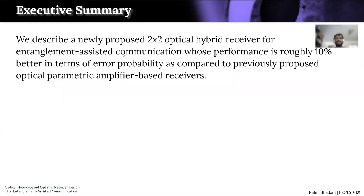To summarize our work, we propose a new 2x2 optical hybrid receiver for entanglement assisted communication whose performance is roughly 10 percent better in terms of error probability as compared to previously proposed optimal parametric amplifier based receivers.